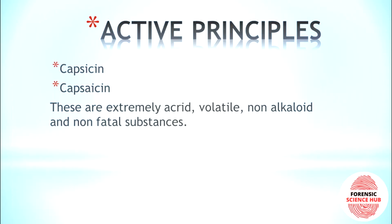Now let's talk about the active principles. There are two main active principles: first is capsaicin and second is capsicin. Both of these are extremely acrid or pungent. They are volatile in nature, non-alkaloid, and non-fatal. You will not die from eating this, but they are very pungent in taste — burning sensation and irritant.